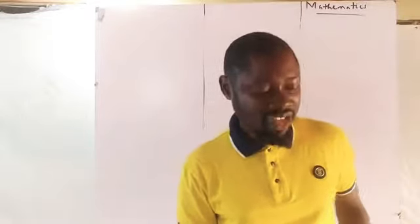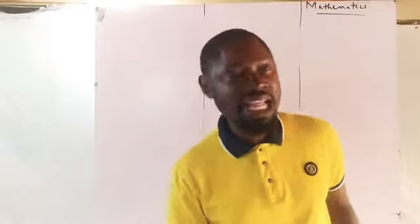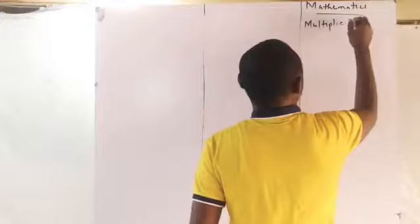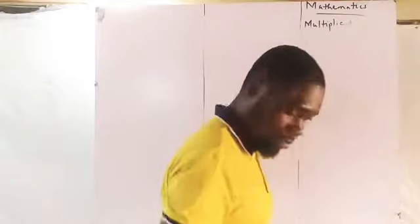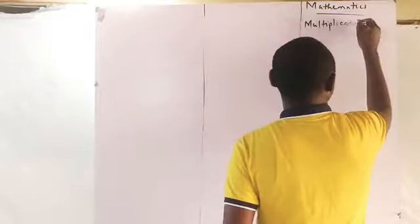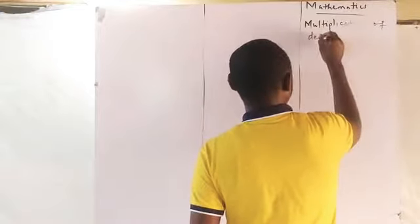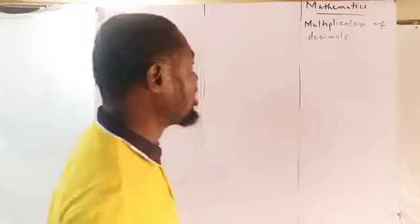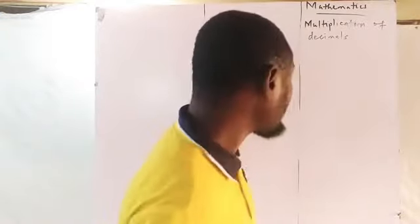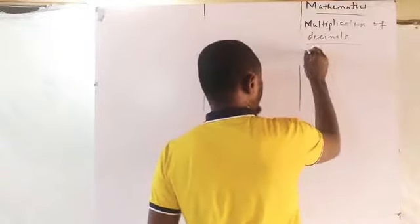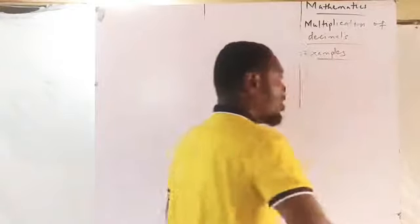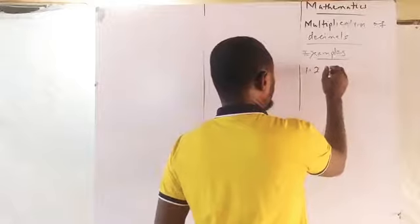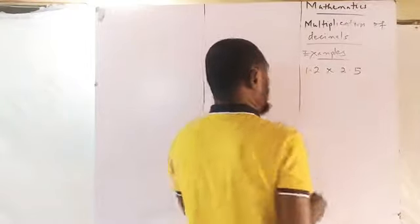Multiplication of decimals is what we'll be looking at today. We're going to deal with examples to make it easier. I'll give you two methods, but I'll start with one today. For example, you have 1.2 times 2.5.